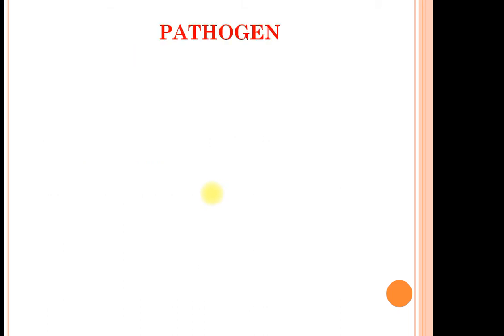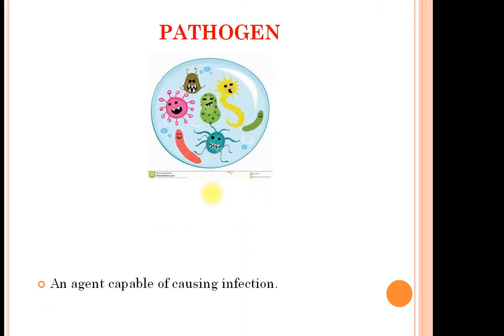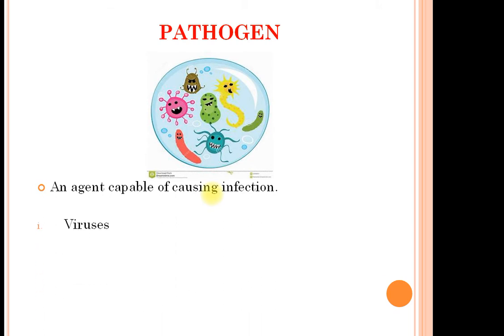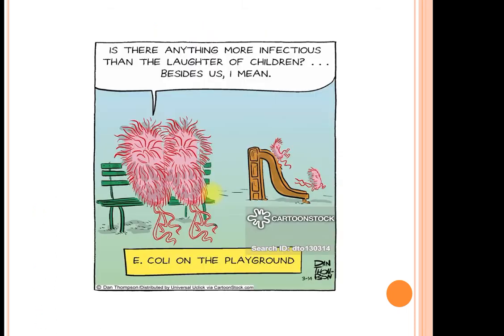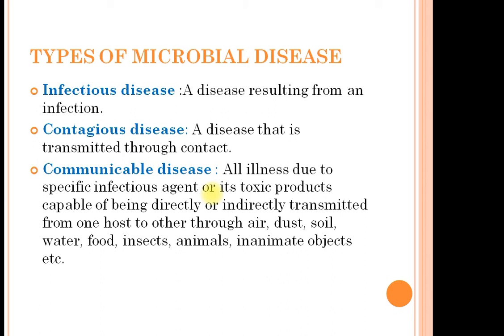A pathogen is defined as an agent which is capable of causing infection. Different pathogens are viruses, prions, bacteria, nematodes such as roundworms and pinworms, arthropods such as ticks, mites, fleas, and lice, and fungi. These two bacteria are discussing whether they are more infectious than the laughter of these children playing on the slide.